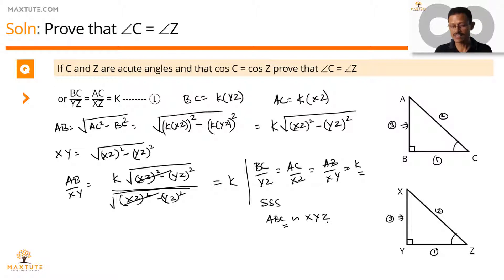What are the corresponding angles? C and Z are the corresponding angles. Corresponding angles of two similar triangles will be equal. So we can establish that angle C is equal to angle Z. Let's quickly summarize this entire discussion in a printed form.